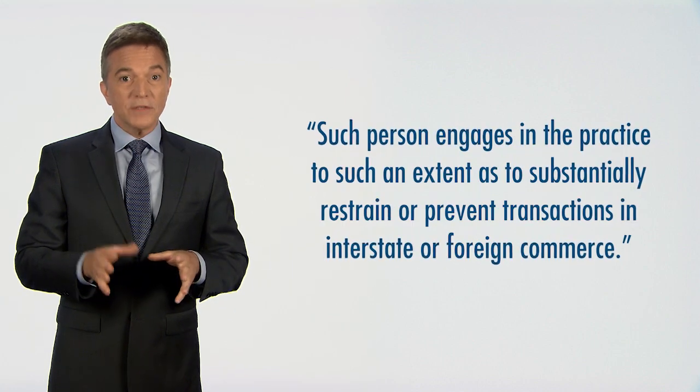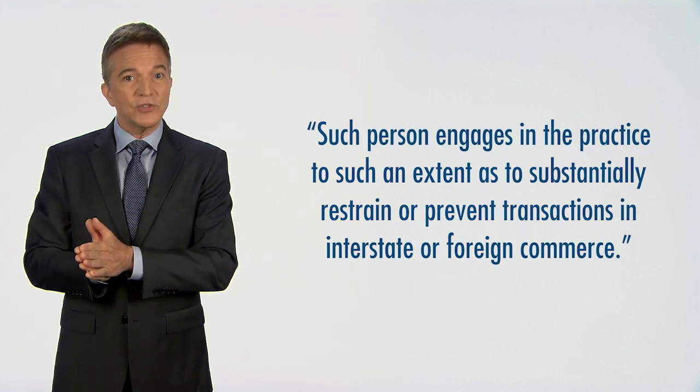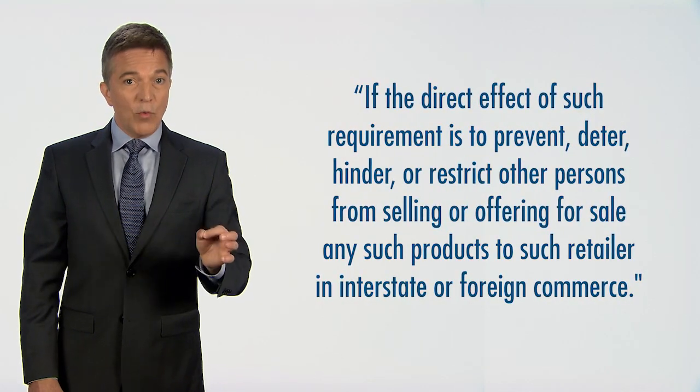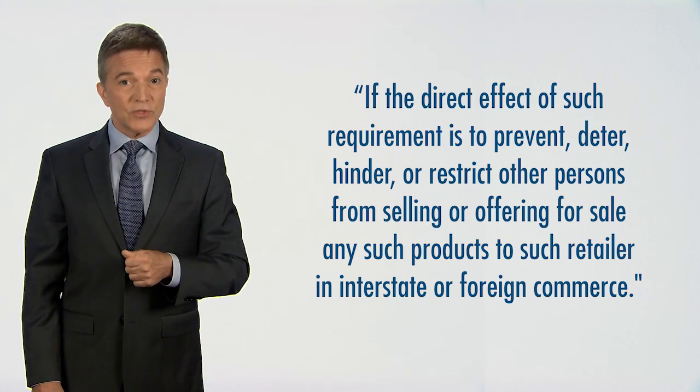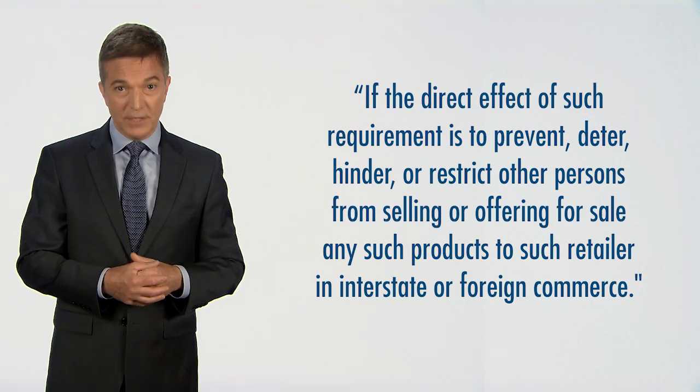The second jurisdictional clause applies if such person engages in practices to such an extent as to substantially restrain or prevent transactions in interstate or foreign commerce. For example, this clause would apply if, during the period of a violation, the excluded product moved in interstate or foreign commerce and the prohibited act causes a retailer not to purchase it. The third and last jurisdictional clause applies if the direct effect of such requirement is to prevent, deter, hinder, or restrict other persons from selling or offering for sale any such products to such retailer in interstate or foreign commerce, requiring some degree of direct interference with interstate or foreign commerce. Remember, interstate or foreign commerce is required to establish a violation, and this element is generally not difficult for TTB to establish.